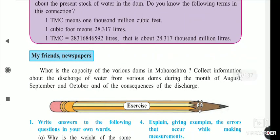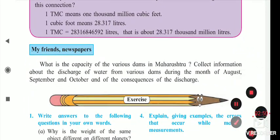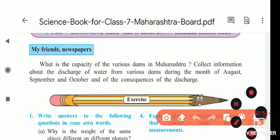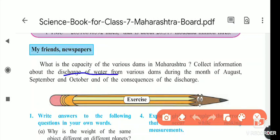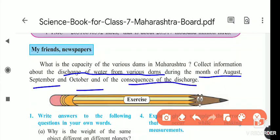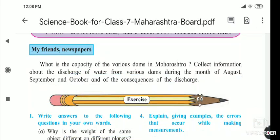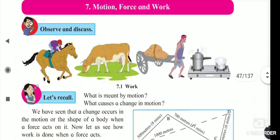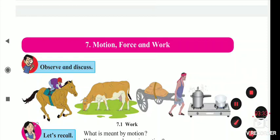The internet or the newspaper — what we have to see is the capacity of various dams in Maharashtra. There are so many dams, like Koyna, and their measuring capacities are there. You have to note those down and collect information about the discharge of water from various dams. As this is a rainy season, if the dams are crossing their limits, the water is released from the dam. We have to note the discharge of water from the dam during the months of August, September, and October, and the consequence of that discharge. Now we will start the next lesson: Motion, Force, and Work.